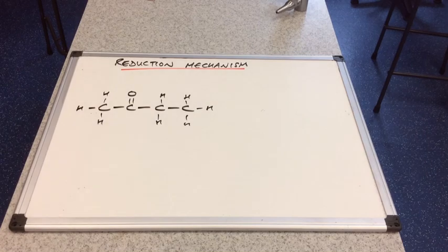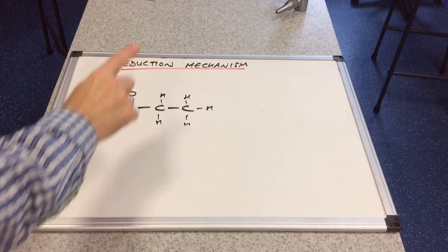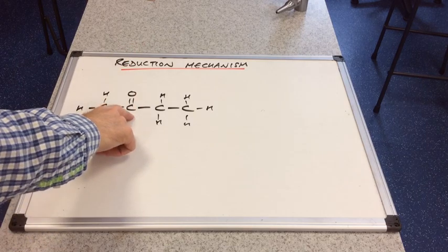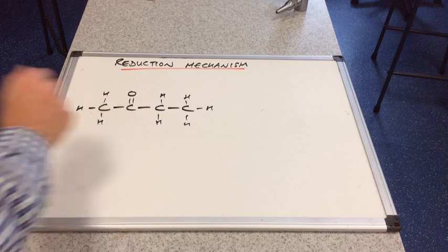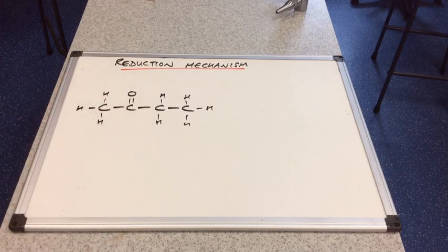So if we look at the mechanism now, I've decided to reduce butan-2-one or butanone. The only way it could be a ketone is if that carbonyl is at carbon number 2.